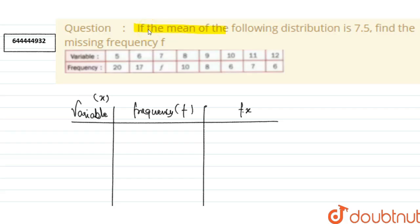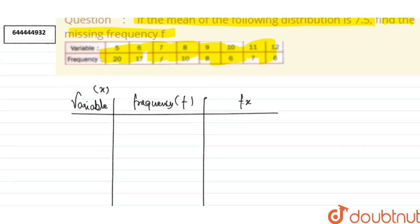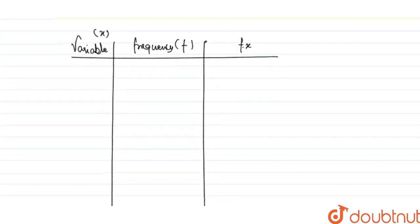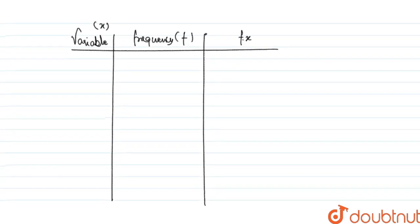In this question, if the mean of the following distribution is 7.5, then we have to find the missing frequency f. The table is given and we have to find the missing frequency f. First of all, let's make a table that contains the variable, frequency, and the value of f into x.